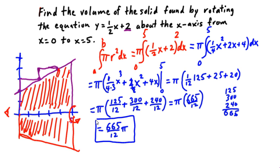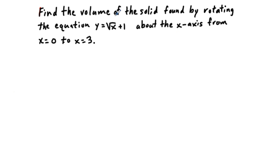I'm going to check it on the calculator, and if it's wrong I'm going to redo this video — I don't expect that I will. Next problem: try to work this one out — very similar. Find the volume of the solid found by rotating the equation y equals square root of x plus 1, about the x-axis, from x equals 0 to x equals 3.